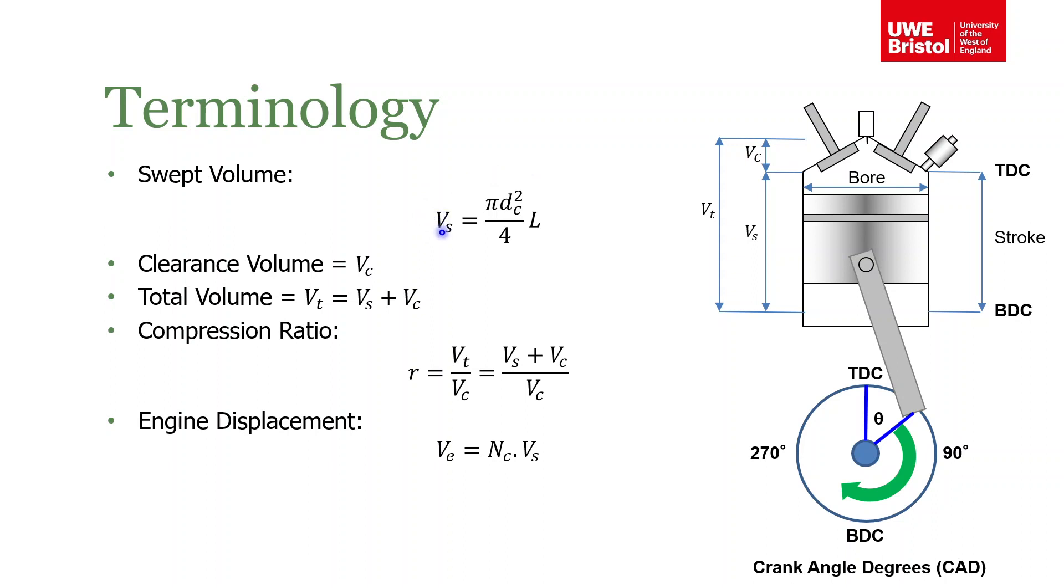There are some formulas for this. The swept volume is just a purely geometric function—it's the volume of a cylinder, where dc is the diameter of the cylinder and l is the stroke. The clearance volume has no formula for that because it will just depend on the design and whatever's at the top. The total volume is the swept volume plus the clearance volume. This is an important parameter that you need to remember: the compression ratio.